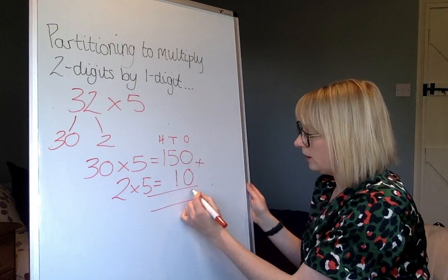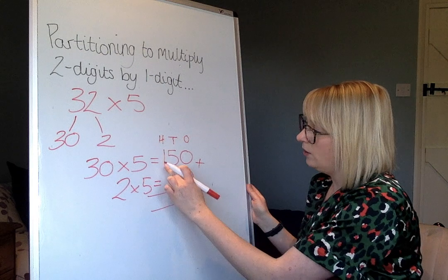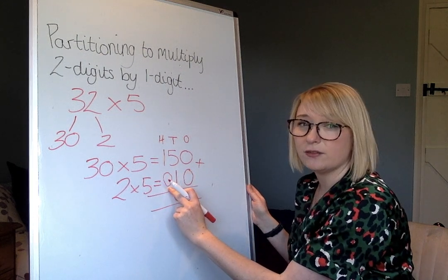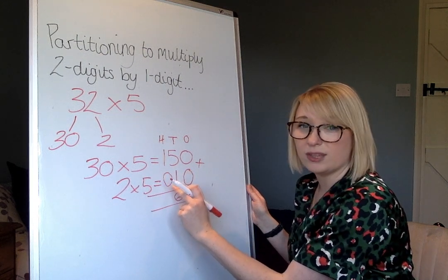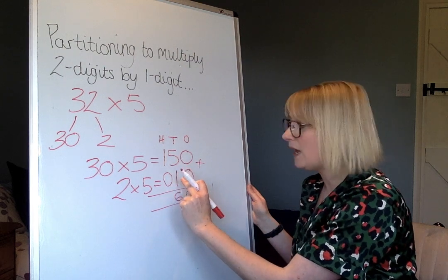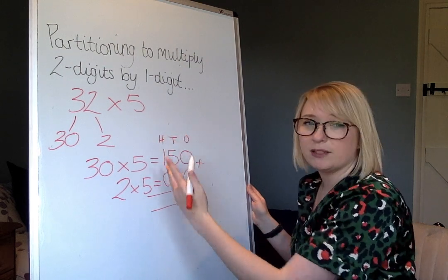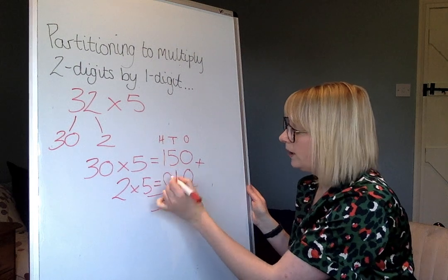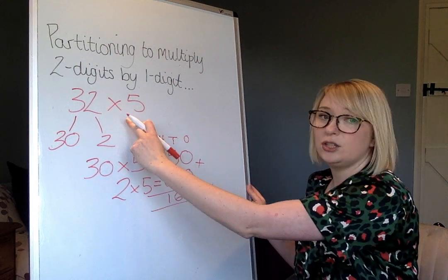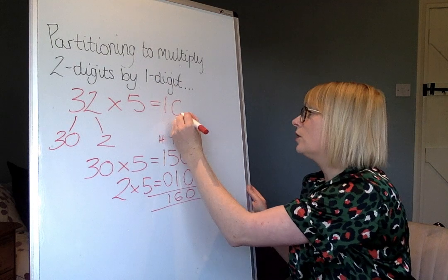Nothing add nothing is nothing. 5 add 1 is 6. 1 add nothing — some people like to put a place value holder there, just to make sure they're not accidentally combining the wrong columns. Make sure we look at the place value of that column: 1 add nothing is 1. So 32 times 5 is 160.